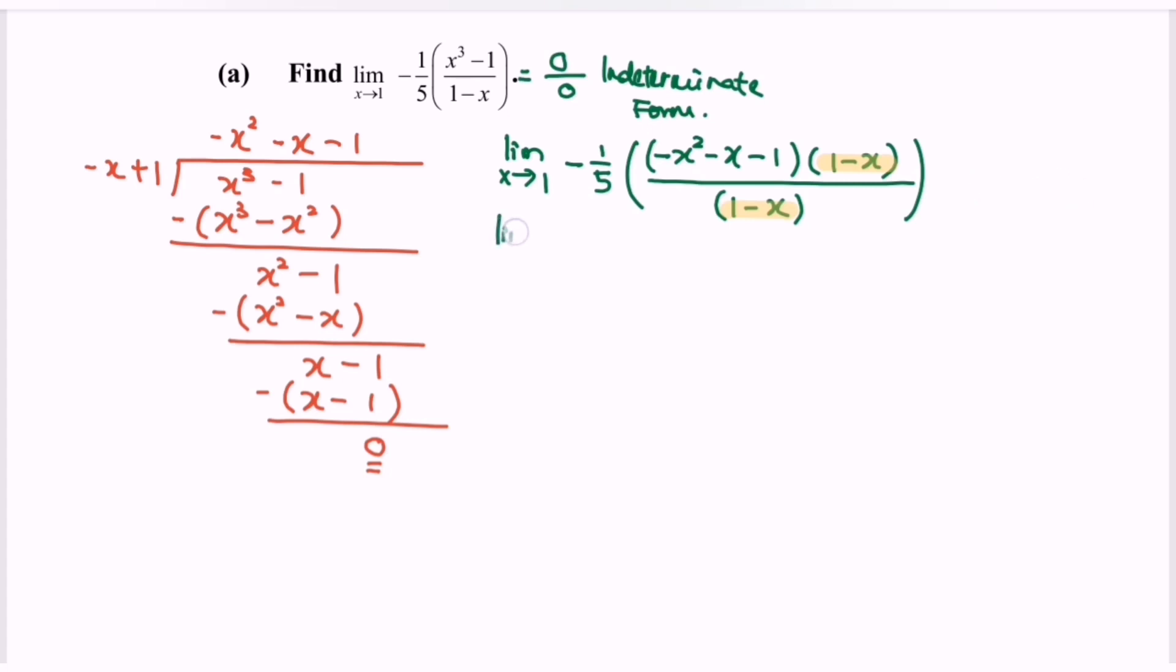Limit when x approaching 1 for the function, negative 1 over 5, multiply with negative x squared, negative x, negative 1. Rewrite the situation: limit when x approaching 1 for the function 1 over 5, bracket x squared plus x plus 1.